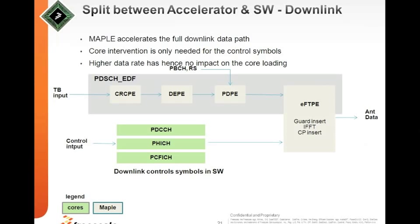Delving into more detail at the physical layer: software optimizations and the split of functionality between software and accelerators. For example, in the LTE downlink, accelerators cover most of the downlink path, and only a little software support is needed for pushing feedback information to the network. This demonstrates how at the layer 1 level we can appropriately quantify what functionality needs to be in accelerators versus software.